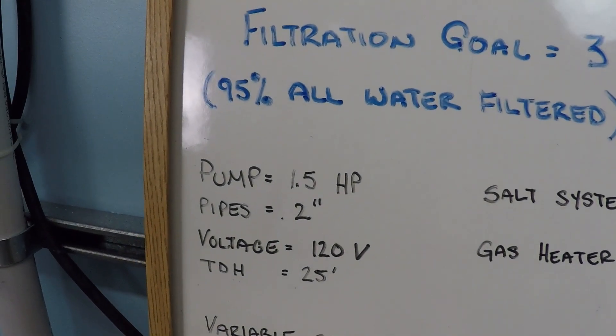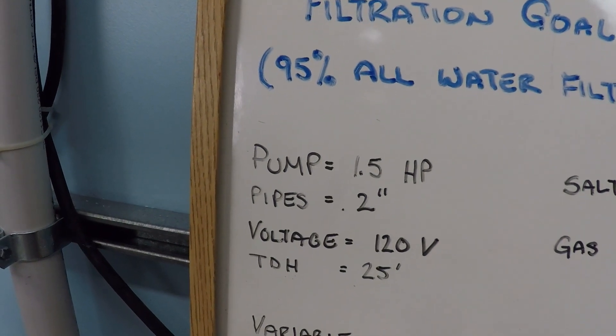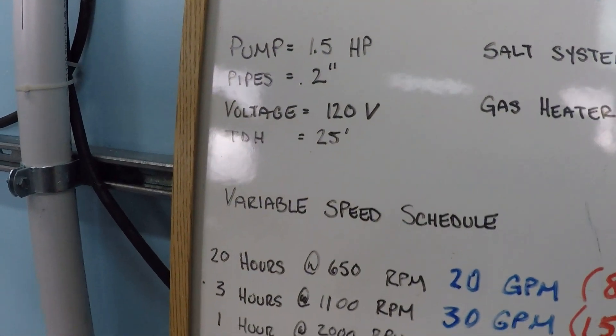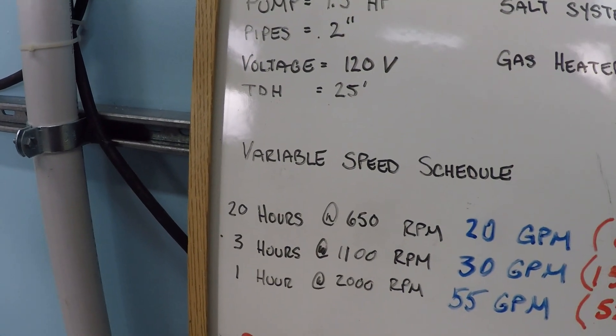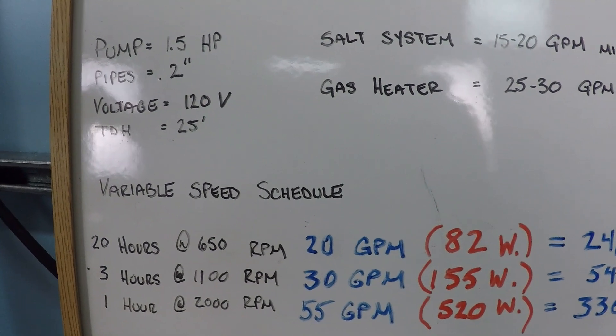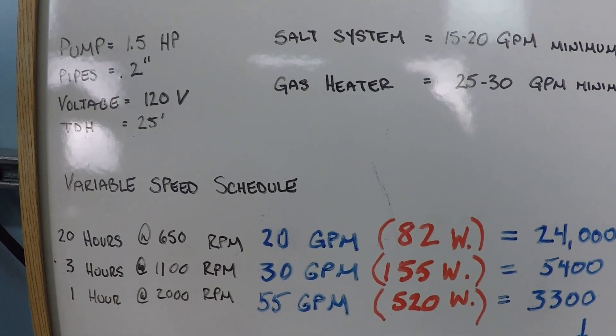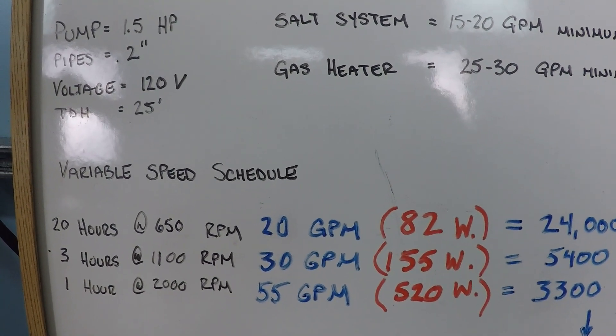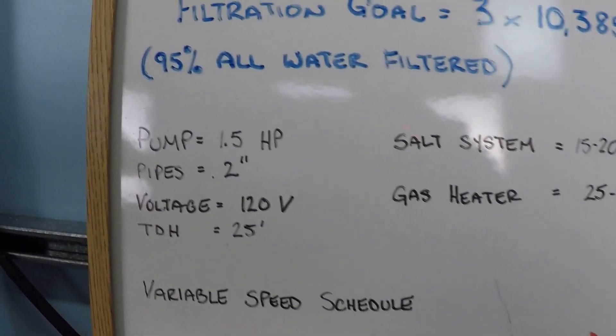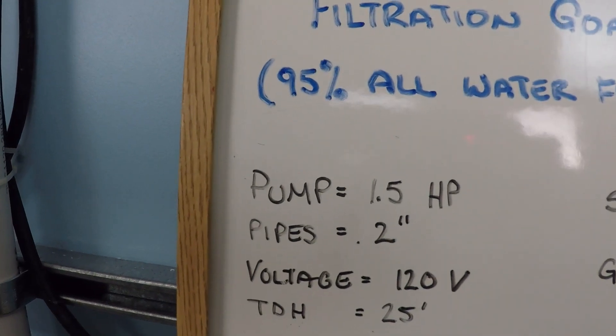With a variable speed pump schedule, we are going to want to have different periods of time at higher speeds, medium speeds, and lower speeds. The exact amount of RPM and flow rate is going to depend on each and every swimming pool because each pool will be different.